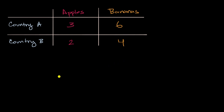When we're thinking about comparative advantage, we really want to think about what is the opportunity cost of producing an apple in each country, and what is the opportunity cost of producing a banana in each country. What is the opportunity cost of an apple in country A? Well, to produce three apples, they would have to trade off six bananas. So that means per apple, they are not producing two bananas — two bananas per apple.